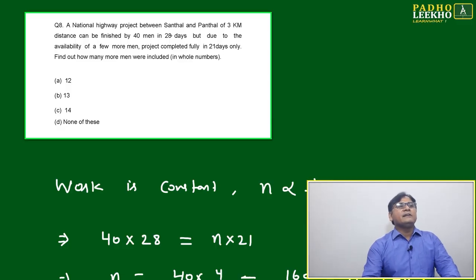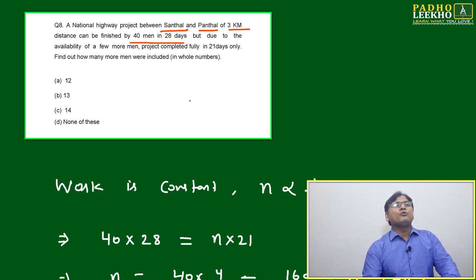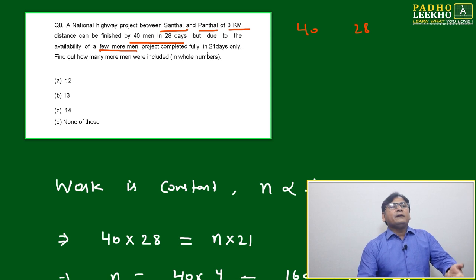Question number 8: A national highway project between Santhel and Panthal, 3 kilometer distance, can be finished by 40 men in 28 days. But due to the availability of a few more men, the project was completed fully in 21 days. What is happening here? This is decreasing, then this must be increased.